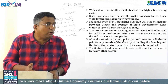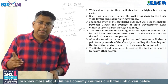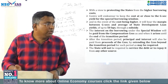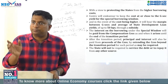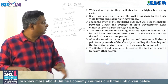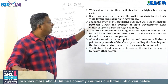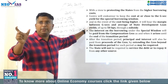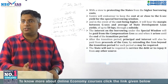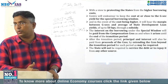The center is also guaranteeing that under the special window program, it will try to ensure that the interest rate is near to the interest rate which the center normally borrows at — that is, the 10-year government security yield. The center will try to keep the cost at or close to the government security yield for the special borrowing program.